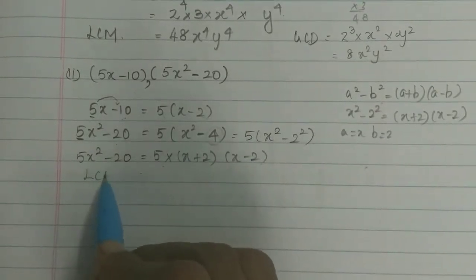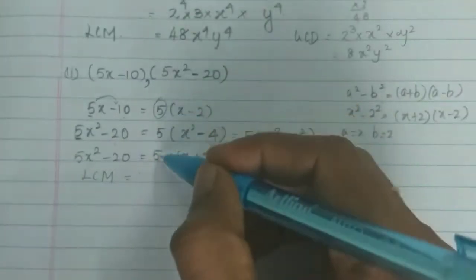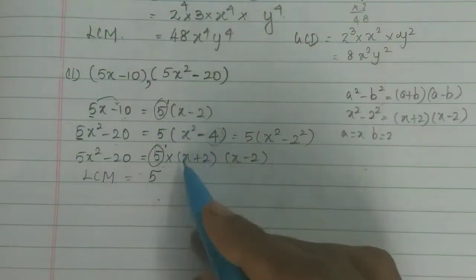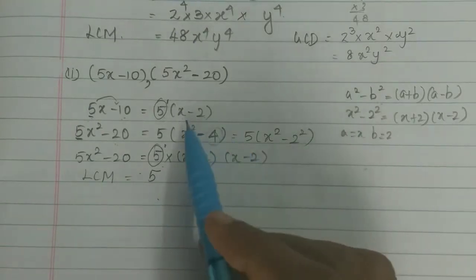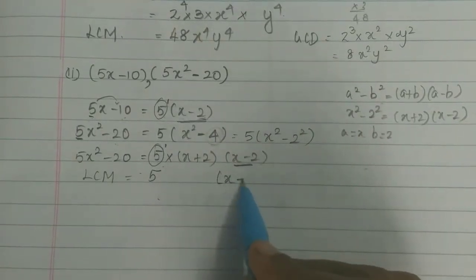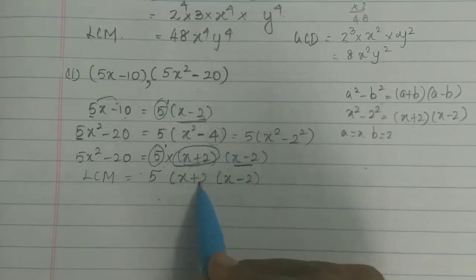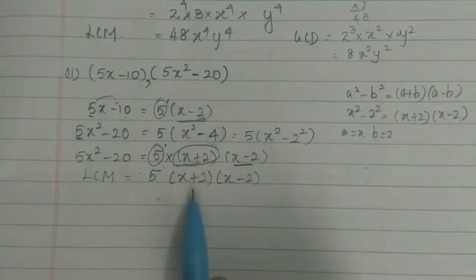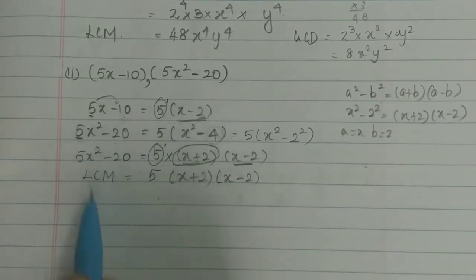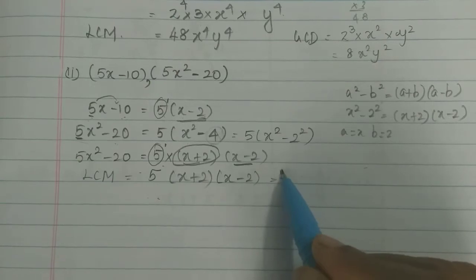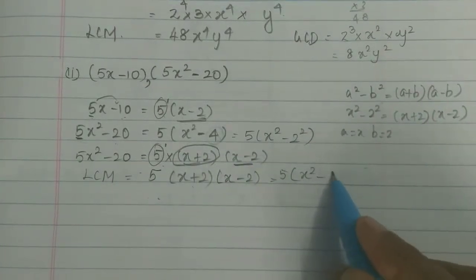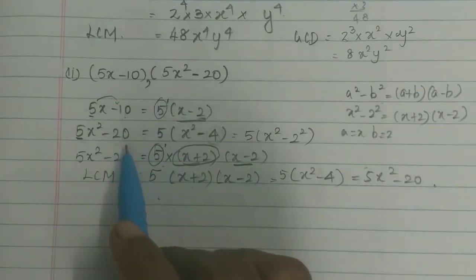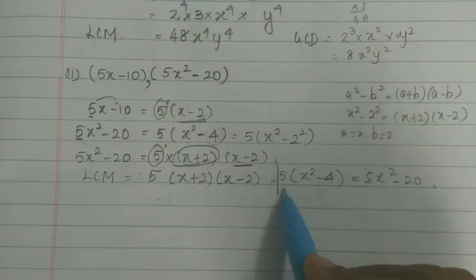So now we can find the LCM. The factor 5 appears in both, (x-2) appears in both, and (x+2) is extra. So the LCM of 5x-10 and 5x²-20 is 5(x+2)(x-2), which equals 5x²-20. That is the LCM, and that is the answer.